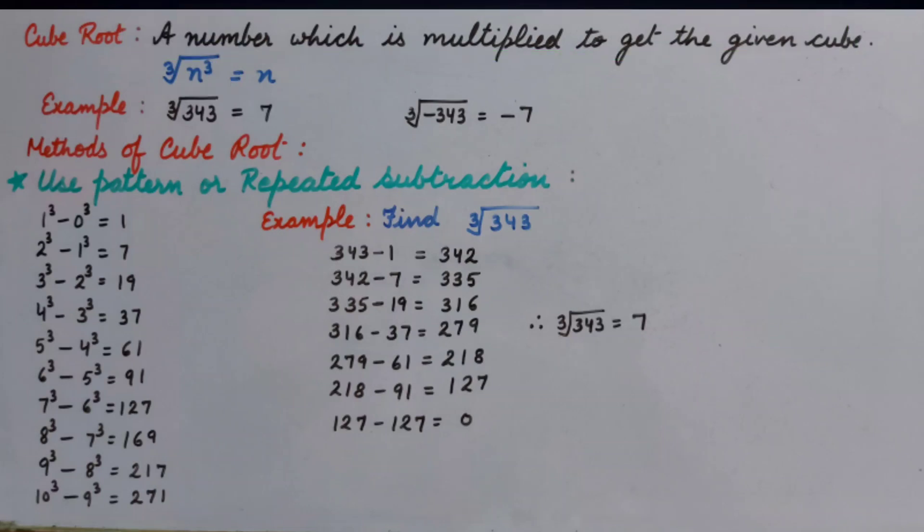This is the sign of cube root. So cube root of n raised to power 3 is equal to n. For example, cube root of 343 that is 7.